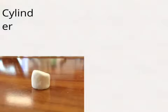A cylinder has two circle faces, one curved side, and zero vertices.